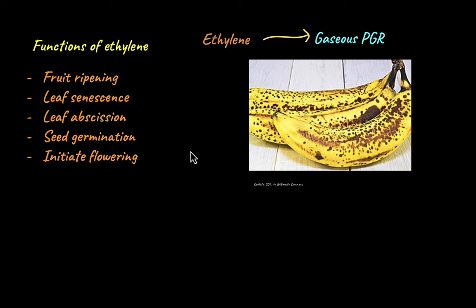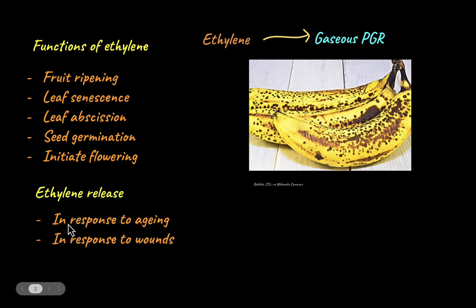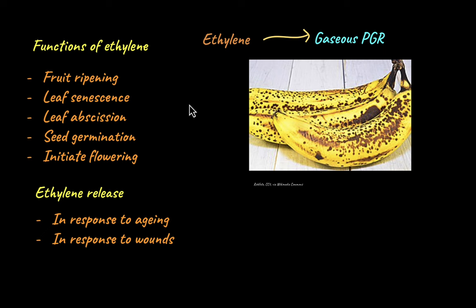Because ethylene is a gaseous PGR, it is released under specific conditions. One condition is in response to aging — as mentioned, it is involved in leaf senescence. Another condition in which ethylene is released is in response to wounds. If a plant is damaged by a cut or an external wound, the damaged part could lead to infections if not removed. So ethylene production increases in the damaged part, which rapidly promotes the abscission of that damaged part.